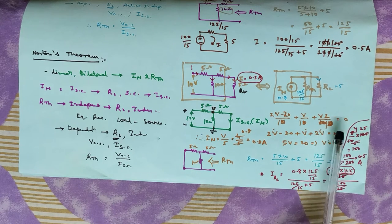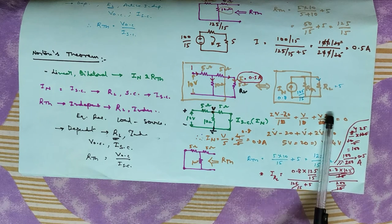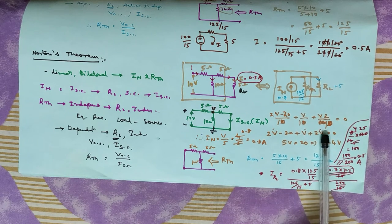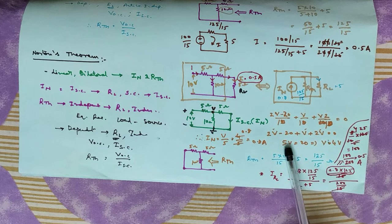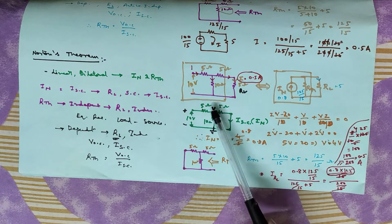This is a simplification. Taking the denominator as 10, we simplify the equation. The final result gives V equal to 4 V.